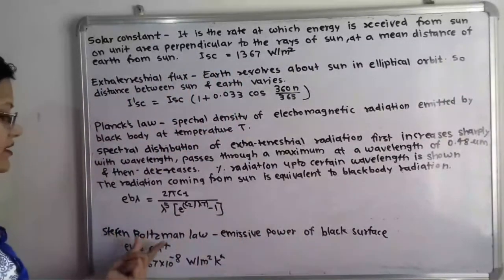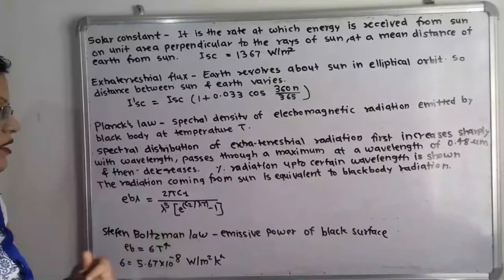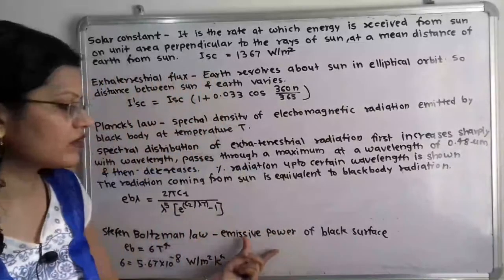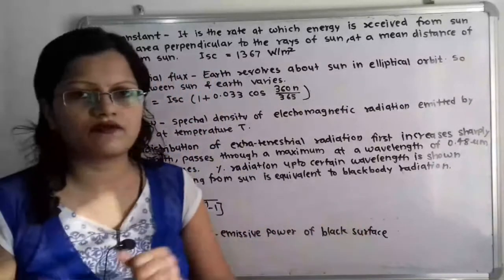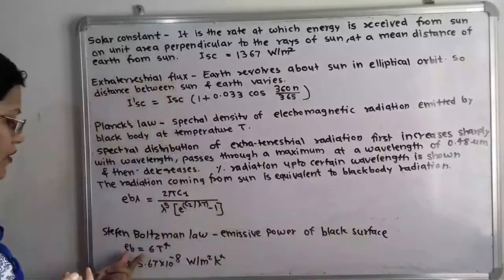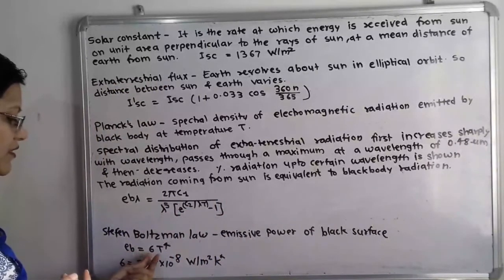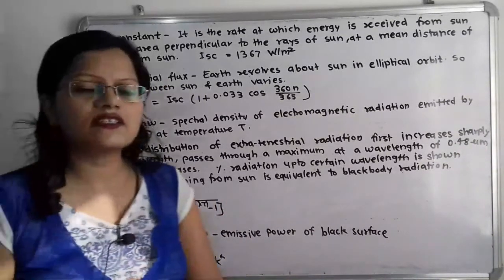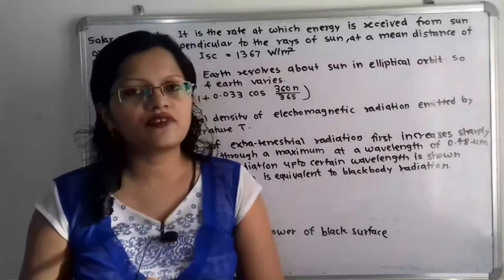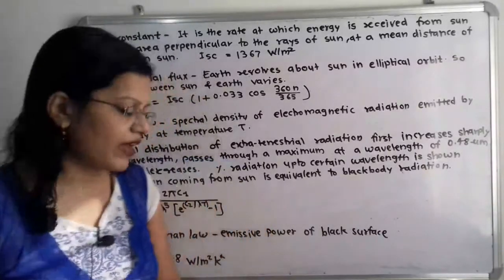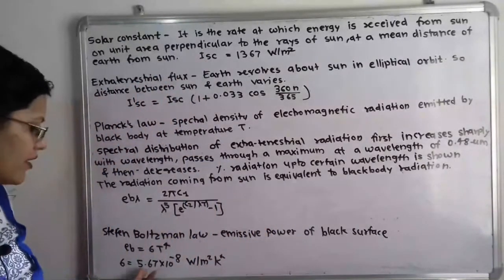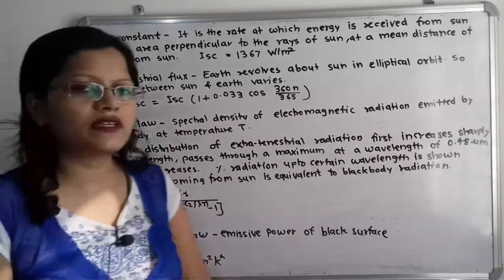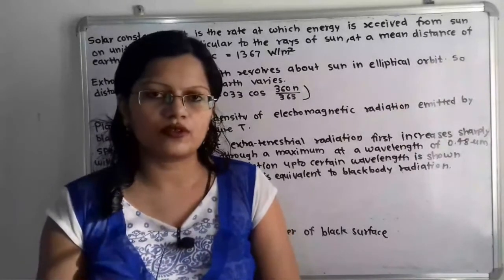Now we will move to the Stefan-Boltzmann law. This law gives us the emissive power of a black surface: e_b = σT⁴, where σ is the Stefan-Boltzmann constant and its value is 5.67 × 10⁻⁸ watts per meter square per Kelvin to the power 4.